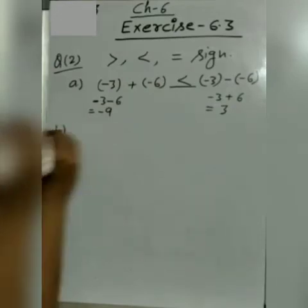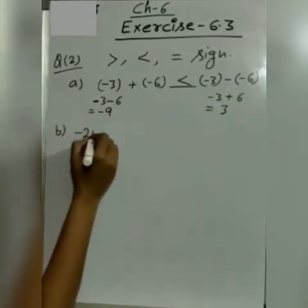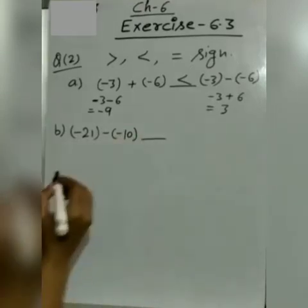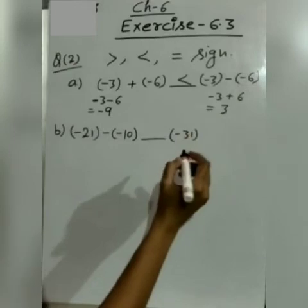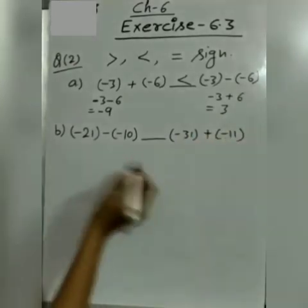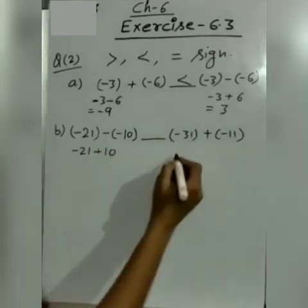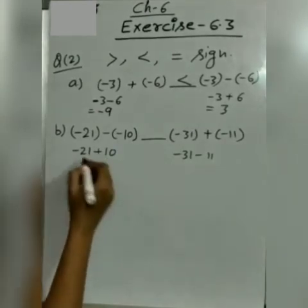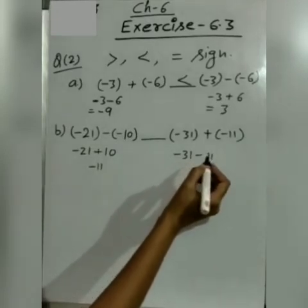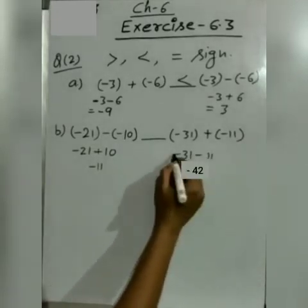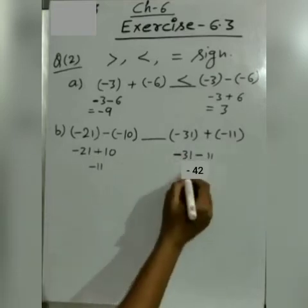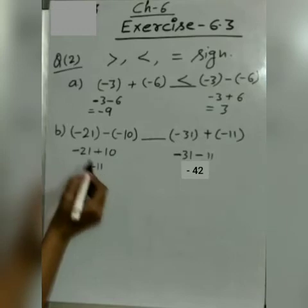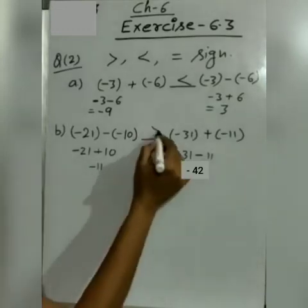Similarly b part minus 21 minus minus 10, minus 31 plus minus 11. Again minus 21 plus 10 and here minus 31 minus 11. Minus 21 plus 10 equal to minus 11 and minus 31 minus 11 equals minus 42. So minus 11 is greater than minus 42.